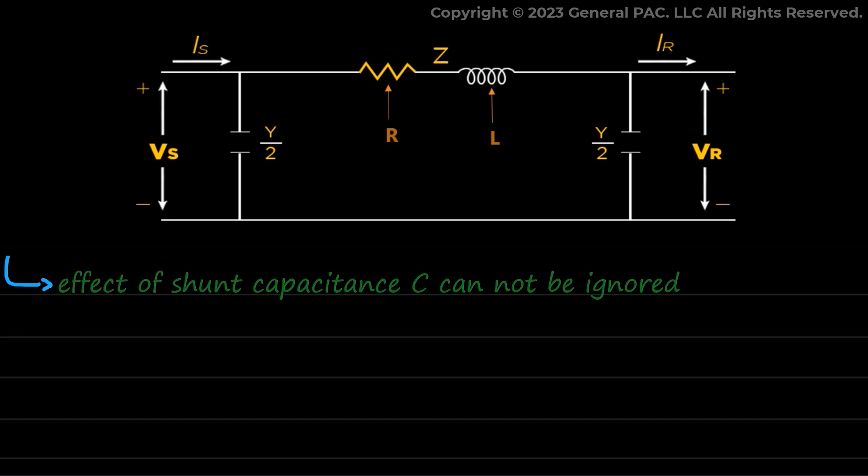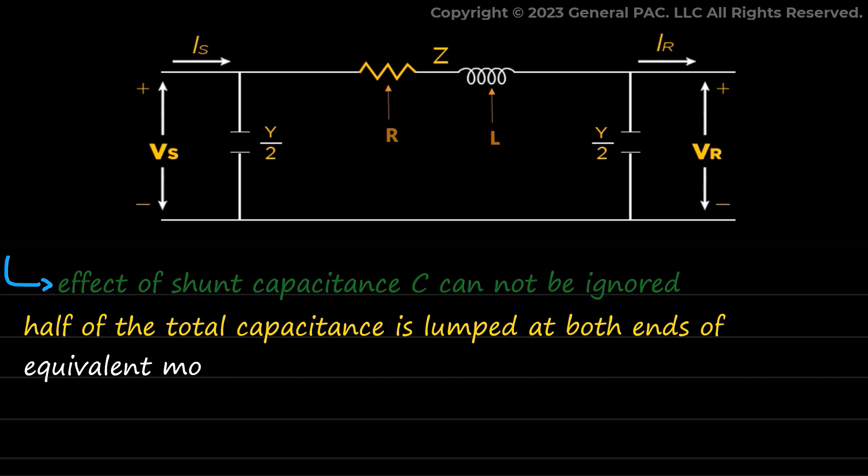Now there may be two ways to represent the shunt capacitance. Half of the total capacitance is lumped at both ends of equivalent model of transmission line in the nominal pi modeling of medium transmission line, or the capacitance may be lumped at the center of medium transmission line in the T model. We will explain the nominal π and nominal T model of medium transmission line now.